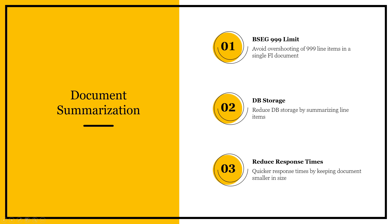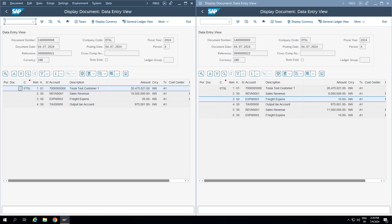This restriction exists because in the BSEG table in the ECC world, the line item field has a limit of only three characters, meaning it can accept a maximum value of 999. This continues in S/4 as well — even though ACDOCA supports more, BSEG is still posted at the same time. Even with fewer than 999 line items, document summarization is still important: it enables quicker reconciliation, reduces database space, and the system takes less time to read data.